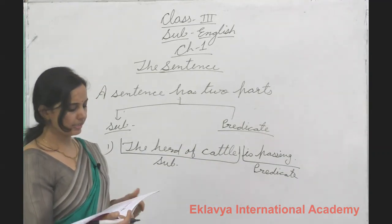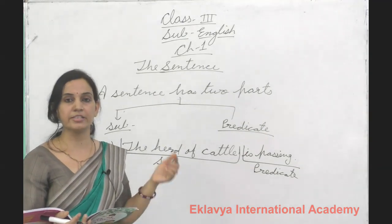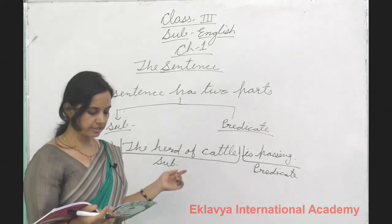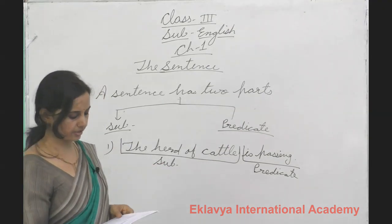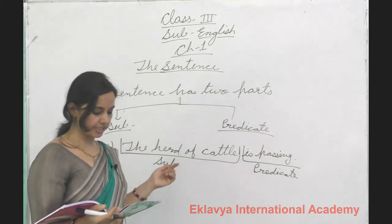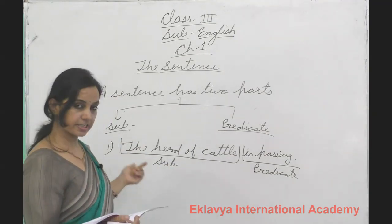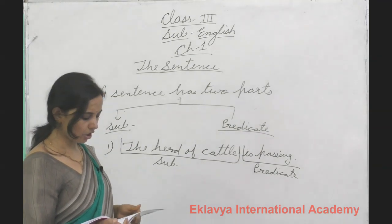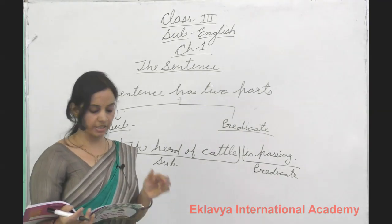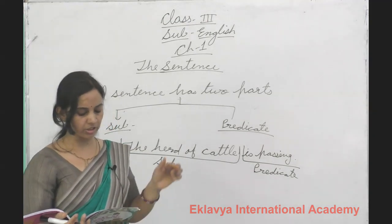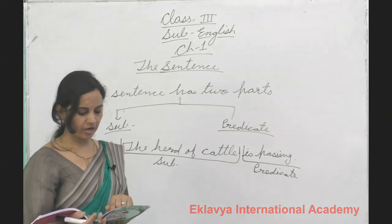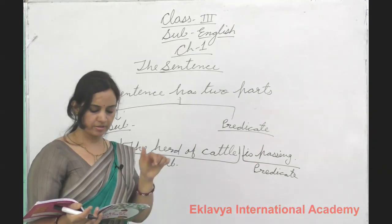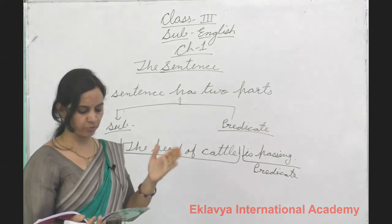The second example: 'These grapes are sour.' We are talking about these grapes, so 'these grapes' is the subject and 'are sour' is the predicate. Third: 'The teacher gave us homework.' The teacher is the subject and 'gave us homework' is the predicate. Fourth: 'The clock ticks all day long.' The clock is the subject and 'ticks all day long' is the predicate.